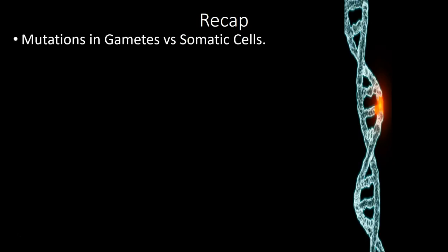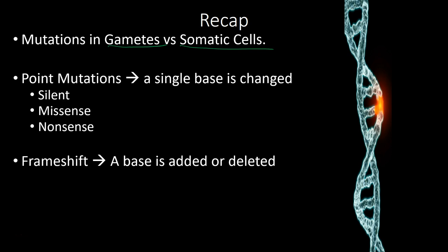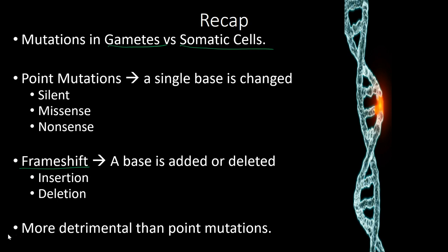Quick recap: mutations in gametes are passed on to offspring; somatic cell mutations are not. Mutations can be beneficial and increase variation, but are often neutral or deleterious. In somatic cells, mutations can cause the cell to lose function and may drive the aging process. A point mutation is a single base change — silent has no effect, missense alters the protein, and nonsense stops the protein early. Frame shift mutations involve a base being inserted or deleted and are far more detrimental than point mutations.